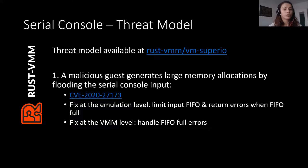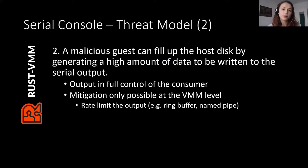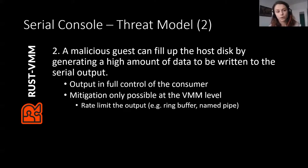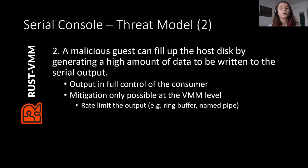This vulnerability also needs cooperation from the VMM, because at the VMM level we should check for FIFO full errors so that we don't get spammed with events from the serial input. A second threat we identified is that a malicious guest can fill up the host disk by generating a high amount of data to be written to the serial output. Since the serial output was in full control of the consumer with no output FIFO, the mitigation is only possible at the VMM level. We recommend consumers to rate-limit the output using a ring buffer — which has a fixed size and will just overwrite data — or a named pipe, which also has a fixed size and no opportunity for unlimited growth.